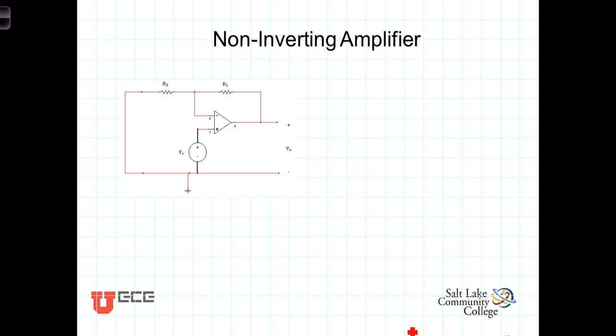Alrighty, let's take a look at an example of a non-inverting amplifier with some real numbers. Let's let R1, the feedback resistor, be 10 kilo-ohms and R2 be 2 kilo-ohms.